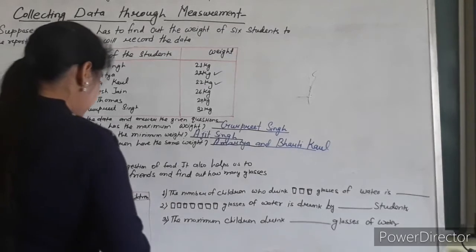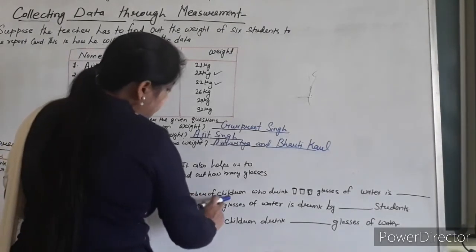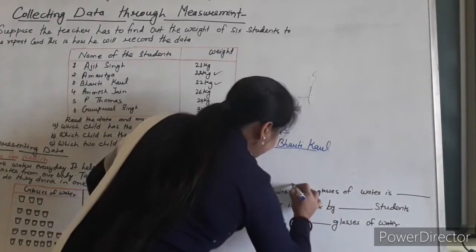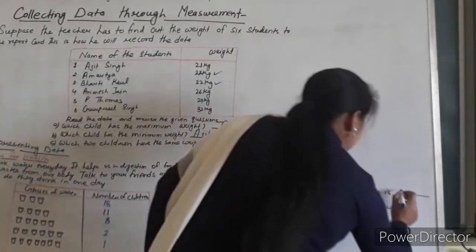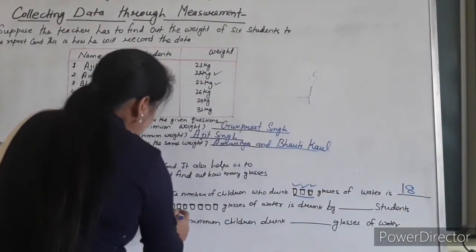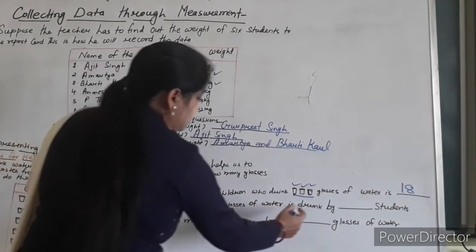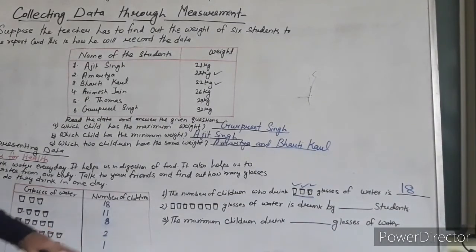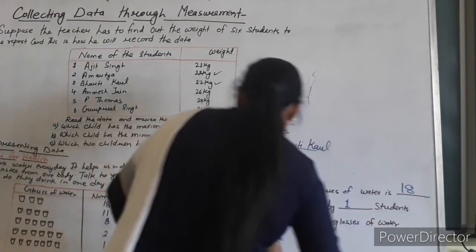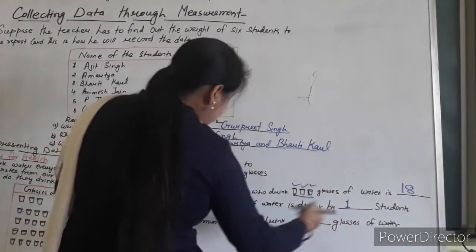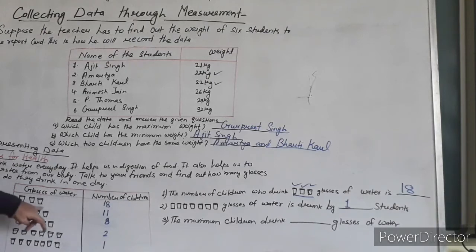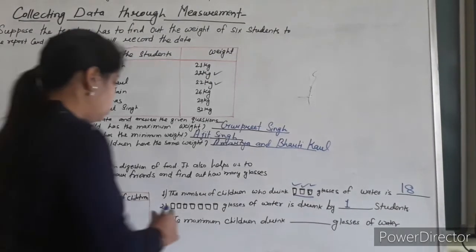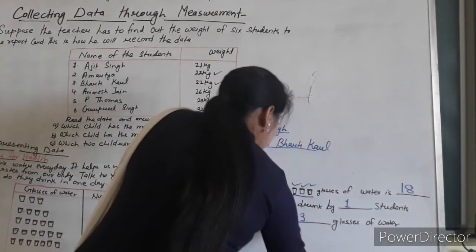Question 1: how many children drink three glasses of water? The answer is 18. Question 2: how many students drink seven glasses of water? The answer is 1. Question 3: which group of children is the maximum? You can see from the data that the maximum number of students drink three glasses of water, so the answer is three glasses.